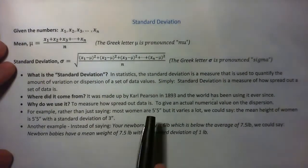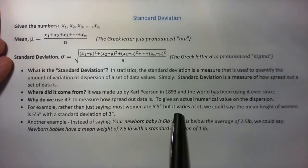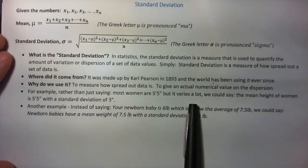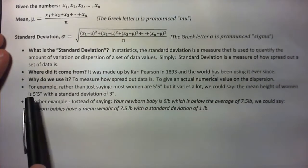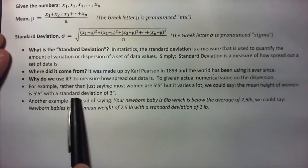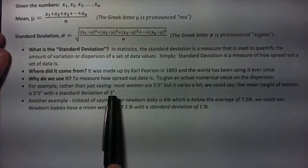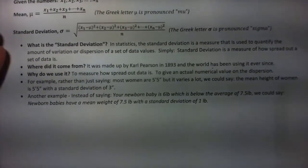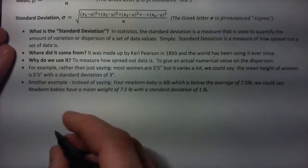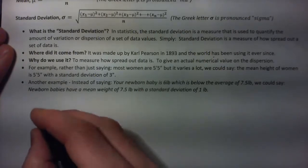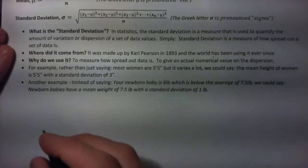If you take heights of women, most women are 5 foot 5, but it varies a lot. So we could say that the mean height of women is 5 foot 5 with a standard deviation of 3 inches. Now we're going to talk about the normal distribution soon — what the normal distribution is, and here's a preview of it.